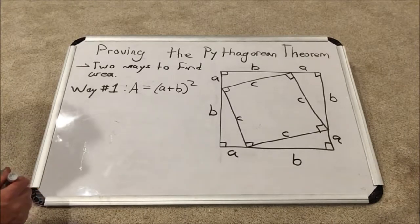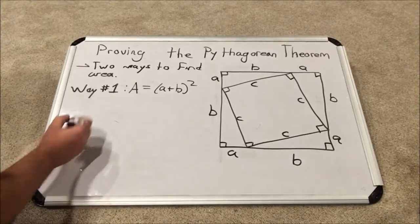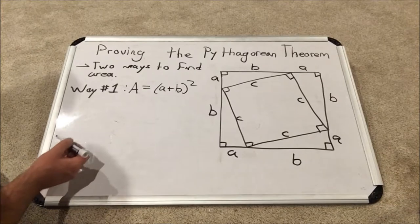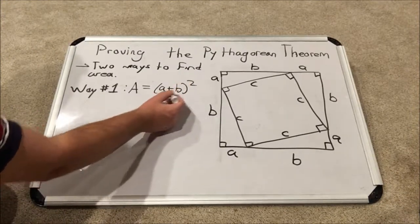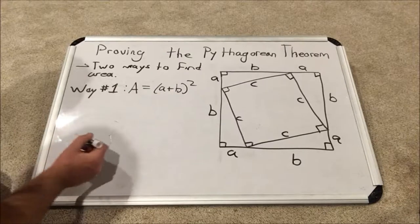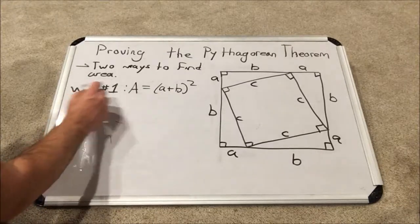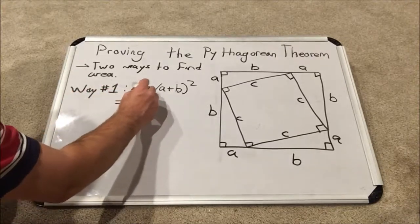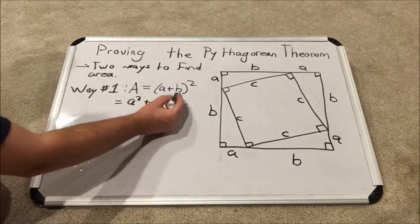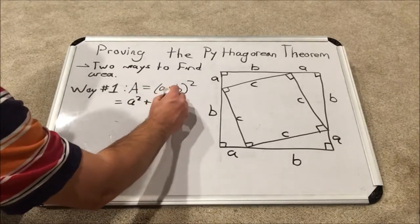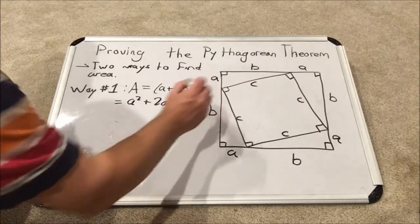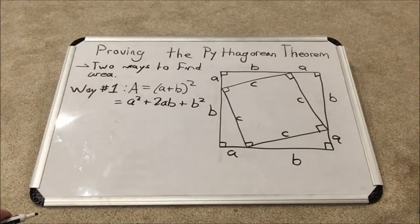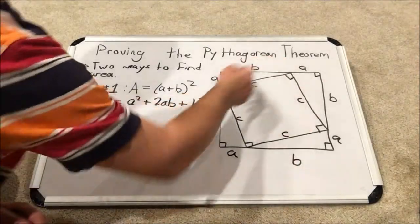Okay, let's write out what that is after we FOIL. As we know from FOILing, you can check my other videos as well, when we square a binomial like this. Binomial means two terms. We will have the first term squared, plus the product of the two terms doubled, plus the second term squared. Okay, this is our formula for the area of the entire figure.